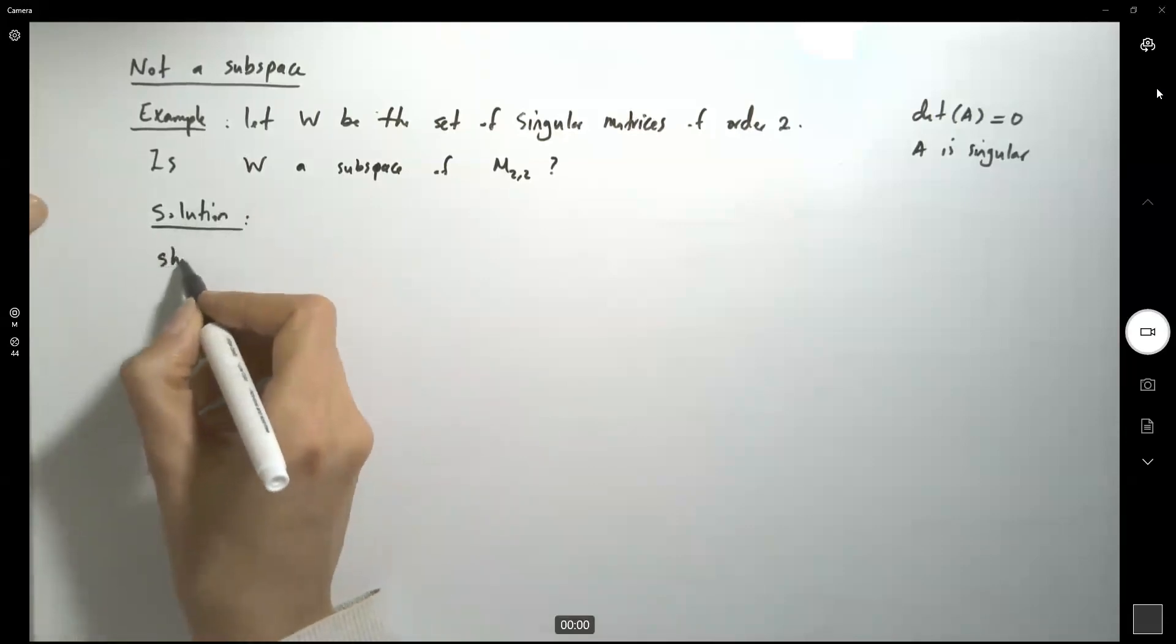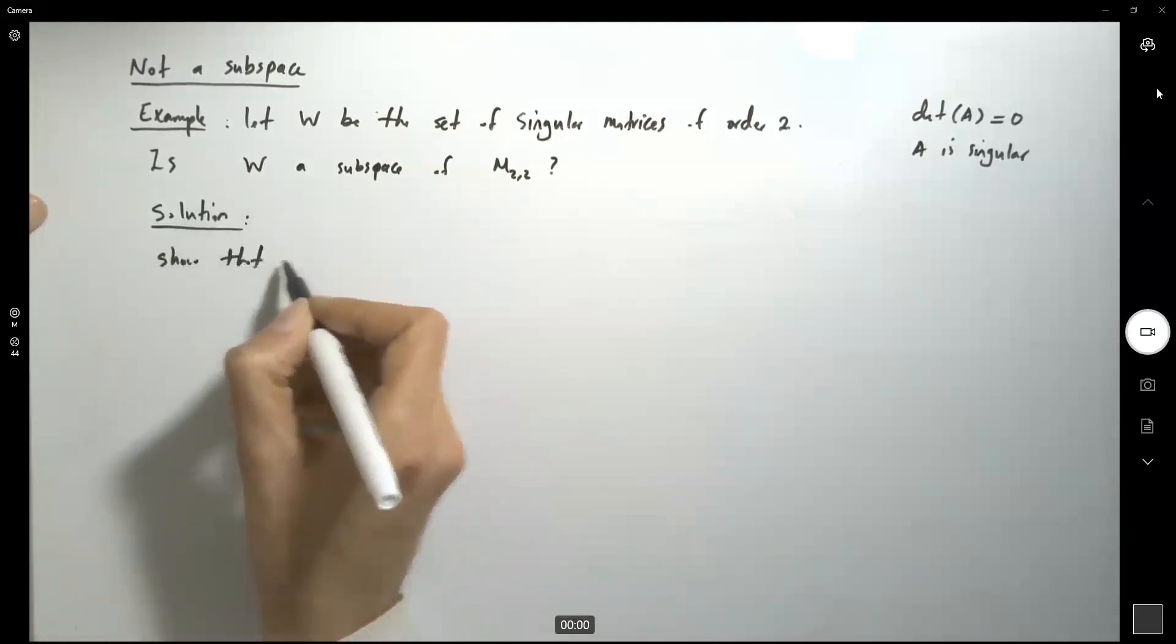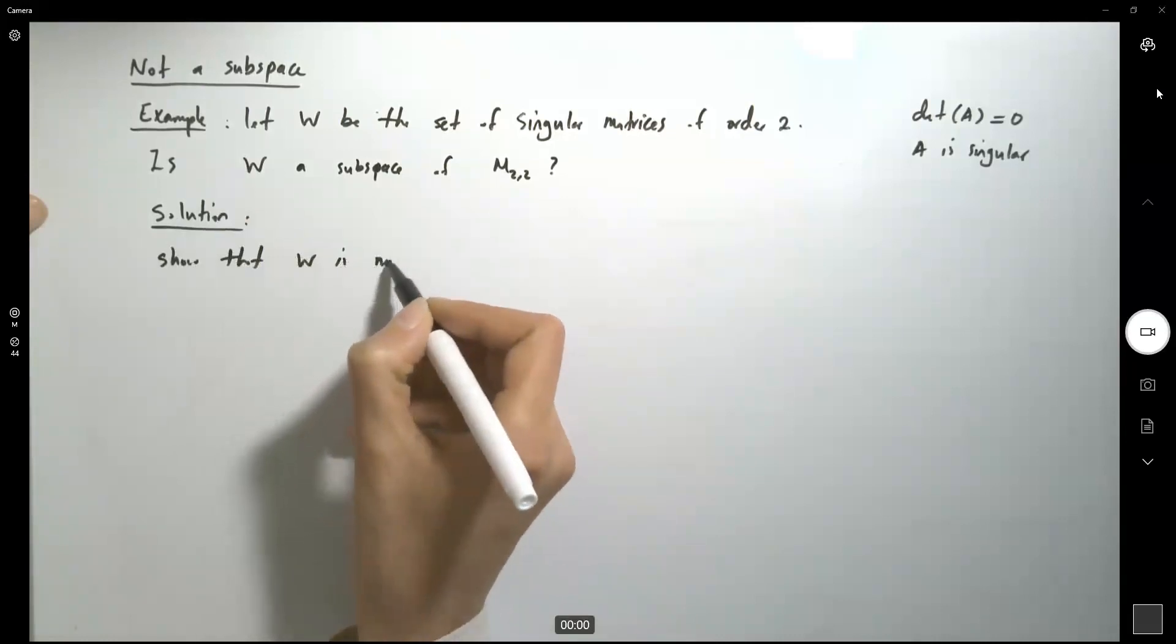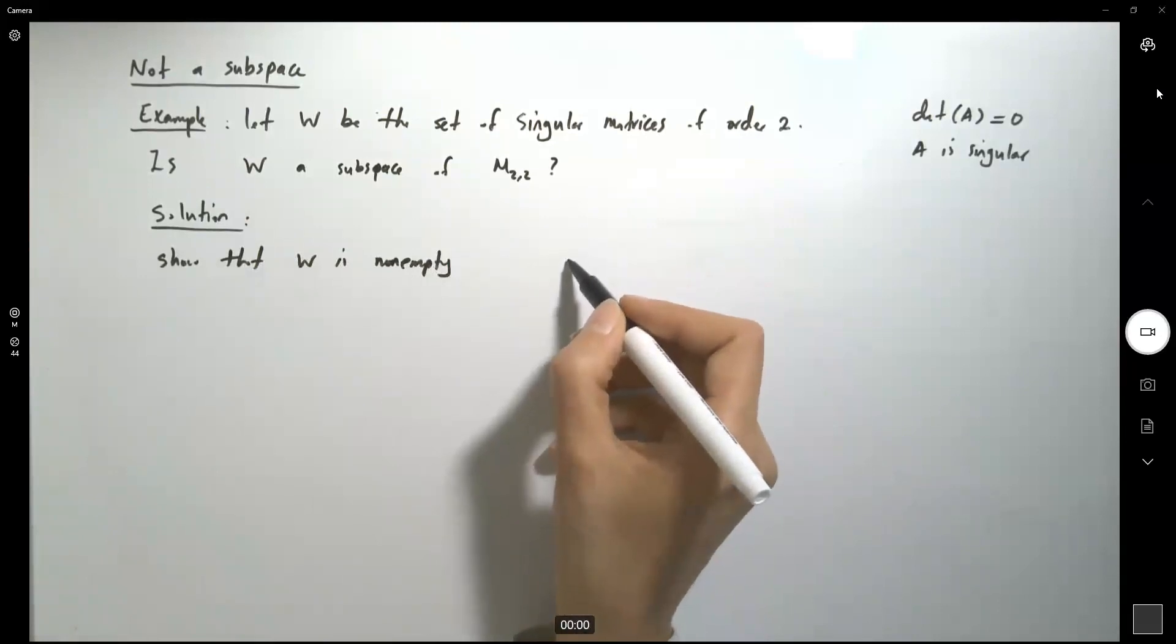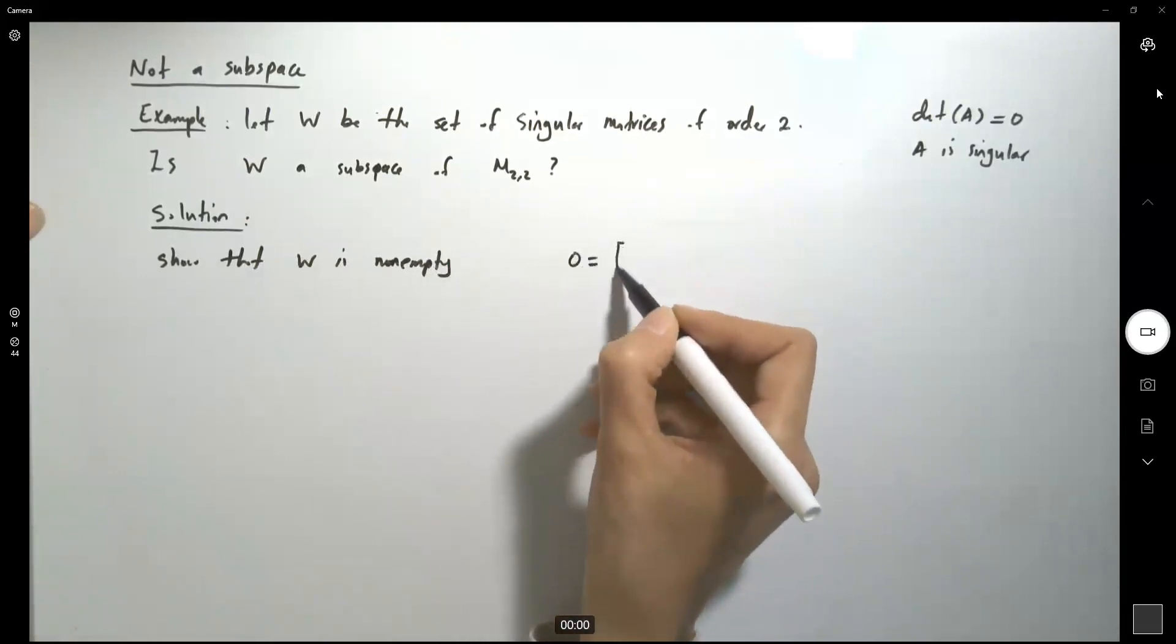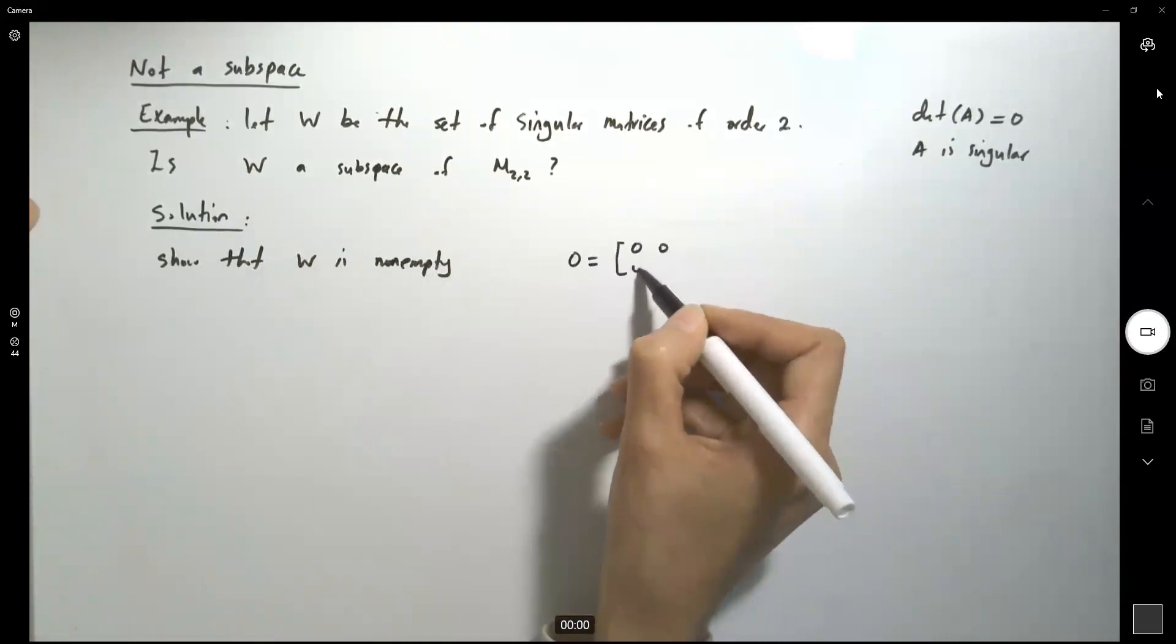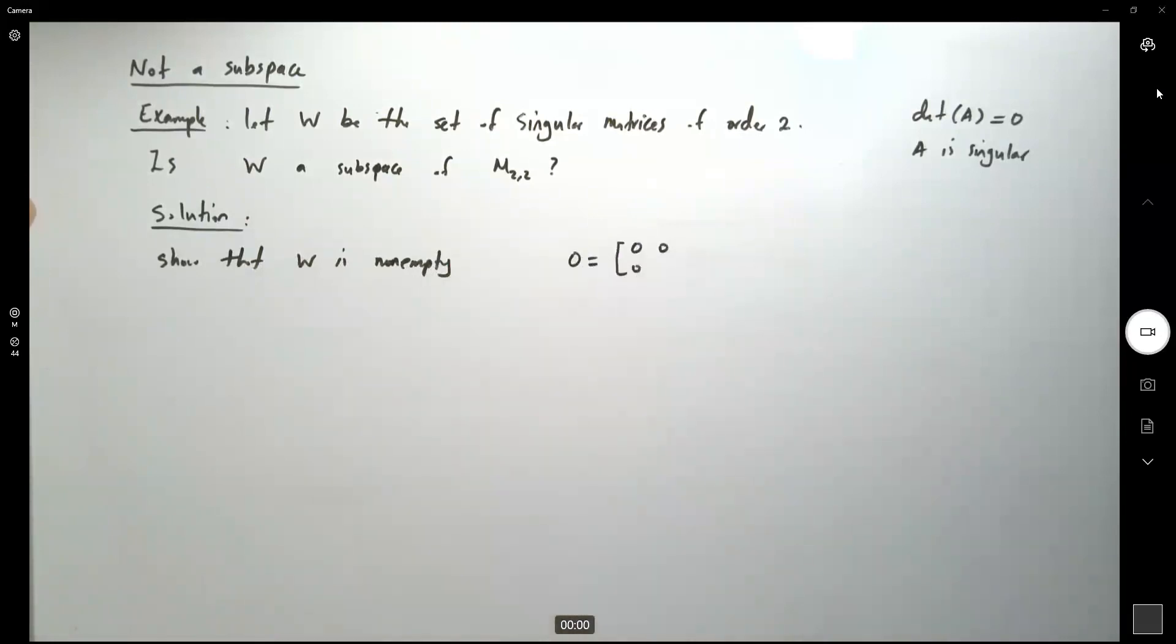First of all, we need to show that W is non-empty. So you can take, for example, the zero matrix [0,0,0,0], or any other matrices. For example, this guy here,